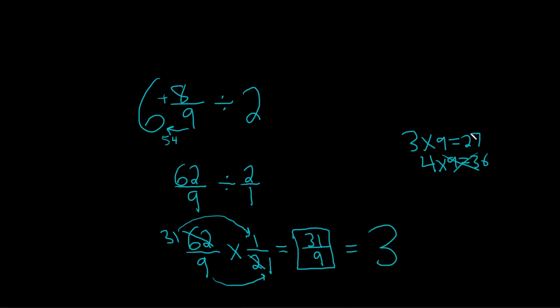This equals 3. That's the whole number part. What's left over? We get 27, and we have 31. So 31 minus 27 is 4. That's what's left over.